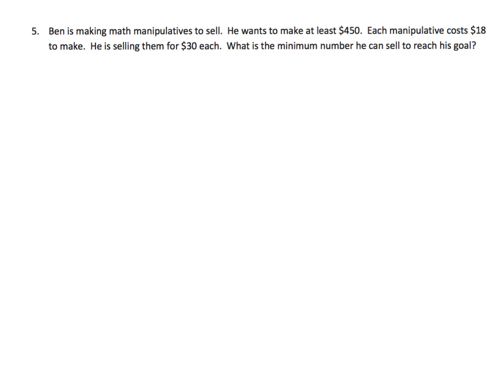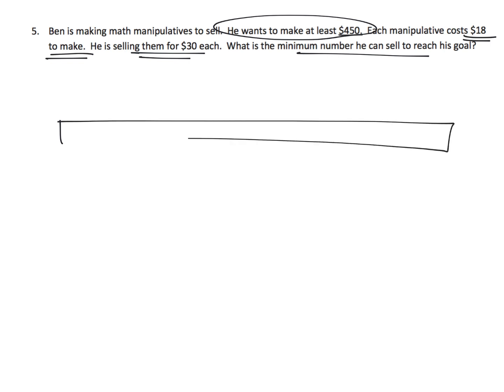And the last problem for this video. Ben is making math manipulatives to sell. He wants to earn at least $450. Each manipulative costs $18 to make, and he's selling them for $30. What's the minimum number of manipulatives that he can sell? Well, the idea is, we want to make $450. But he's not earning $30 each. Because really, they cost $18. So 30 minus 18 is $12. So he's really making $12 apiece.